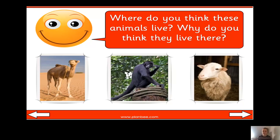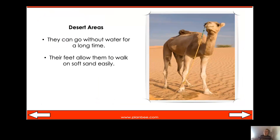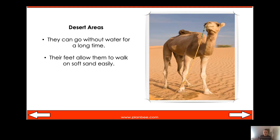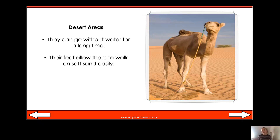Let's have a look at the first animal. Our first animal is a camel. We've spoken about a camel both last lesson and earlier on in this lesson. A camel lives in a desert area, and as we know, camels are able to go without food or water for long periods of time. This is useful in the desert because there is very little food or water available.